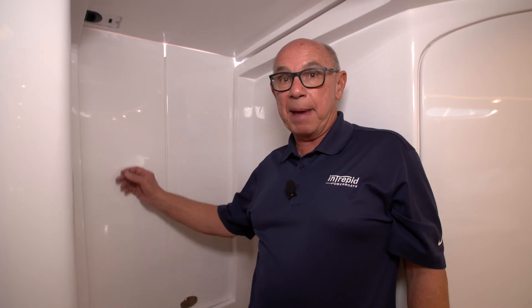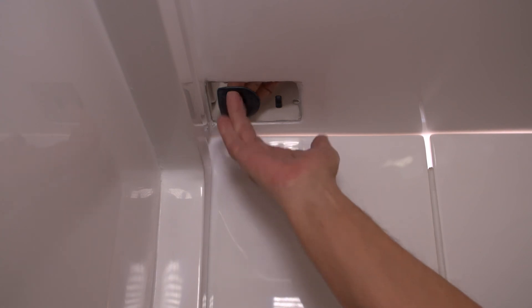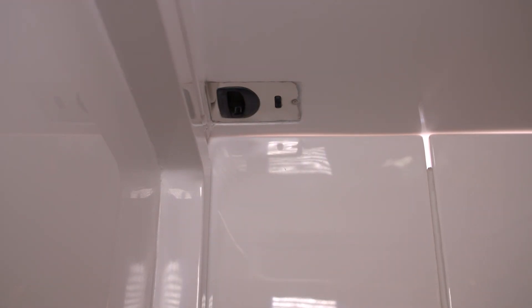To secure your cabin from the inside, all you need to do is press the back of the black button, the elongated button, that's on the latch itself. Press that, and it's locked.